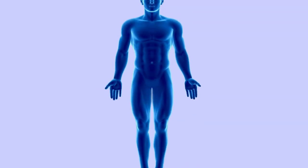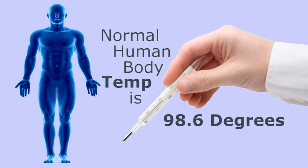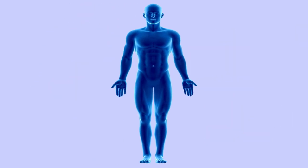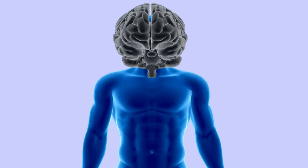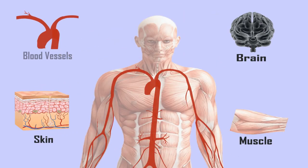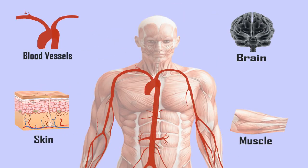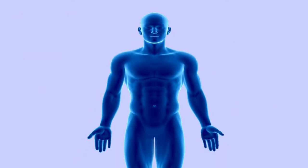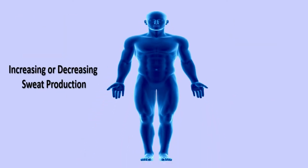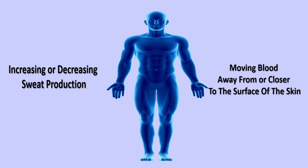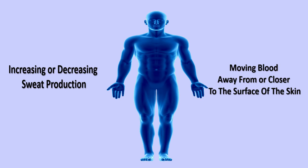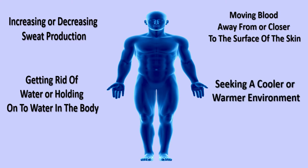In several ways, our body maintains normal body temperature. The organs involved in helping with temperature regulation include the brain, skin, muscle, and blood vessels. The body responds to changes in temperature by increasing or decreasing sweat production, moving blood away from or closer to the surface of the skin, getting rid of water or holding on to water in the body, and seeking a cooler or warmer environment.